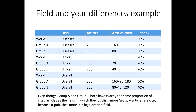Here's an example. We have group A, group B, and the world, publishing in Infectious Diseases and Medical Ethics. Both group A and group B are world average for infectious diseases at 80% cited, and world average for ethics at 20% cited. But overall group B has 40% cited and group A has 60% cited — even though they're both world average in both fields. This is because group A publishes a higher share of its articles in the high-citation specialism infectious diseases, giving group A an unfair advantage.